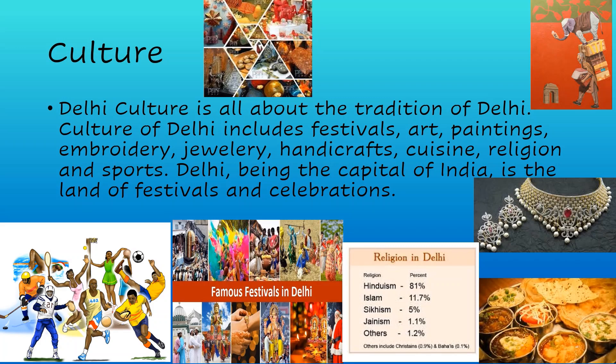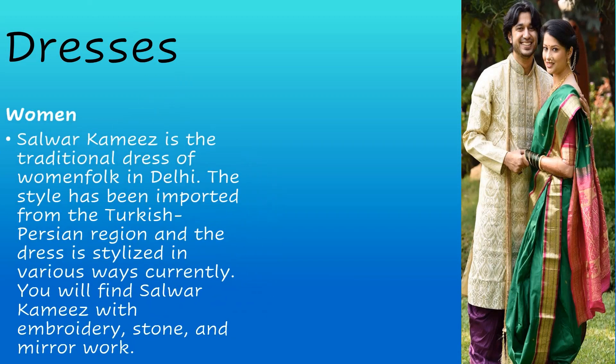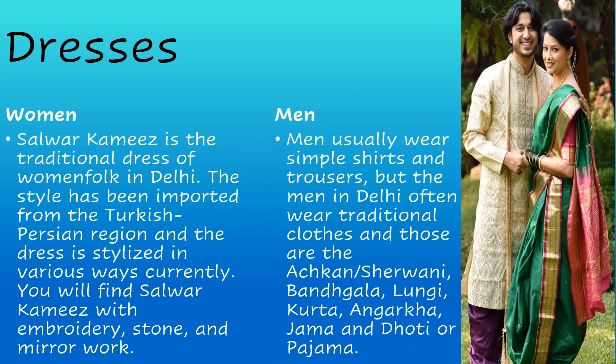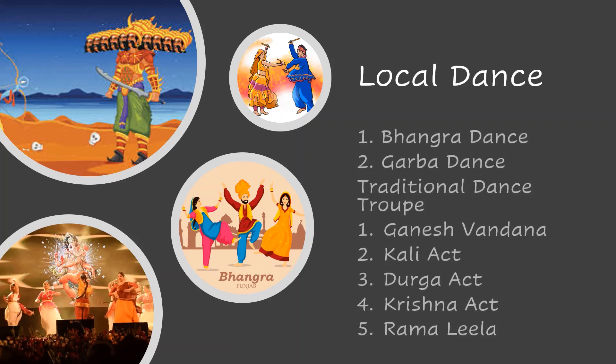Delhi, being the capital of India, is the land of festivals and celebrations. The traditional dress of women is the salwar kameez, imported from the Turkish-Persian region and stylized in various ways, often featuring embroidery, stone, and mirror work. Men usually wear simple shirts and trousers, but men in Delhi often wear traditional clothes such as the achkan or sherwani, bandh gala, lungi, kurta, angarkha, and jama or dhoti or pajama.